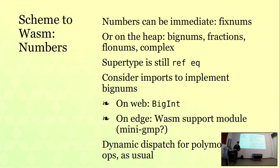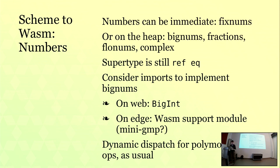If you're compiling to a non-web target, you obviously can't rely on BigInt. But since the way WebAssembly modules compose with each other and with those facilities is the same, you can implement BigInt functionality via another WebAssembly module. So if you're running your code on, say, Fastly's edge compute platform, you compose your Scheme module with a module providing BigInt services — which might be compiled from GMP or mini-GMP or something like this.